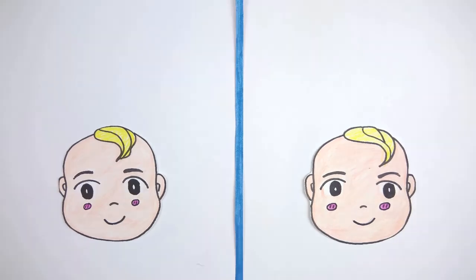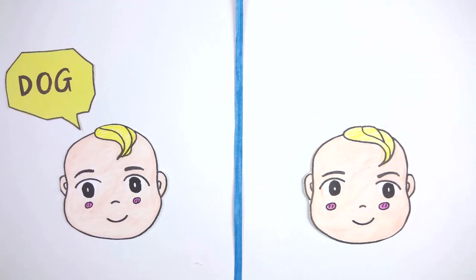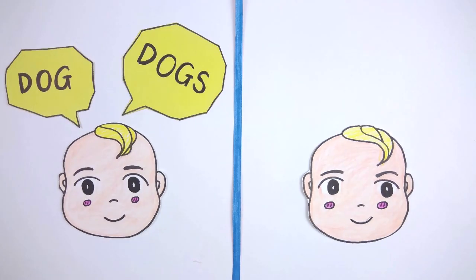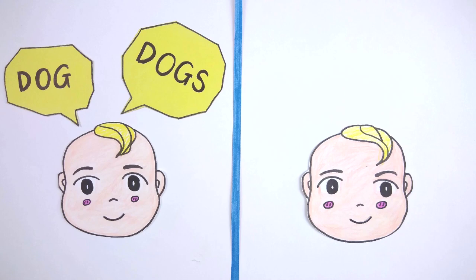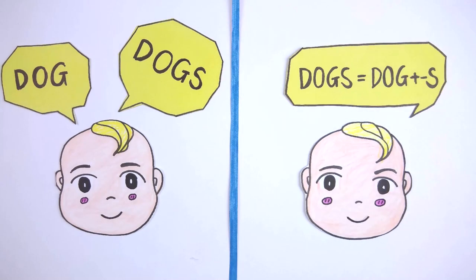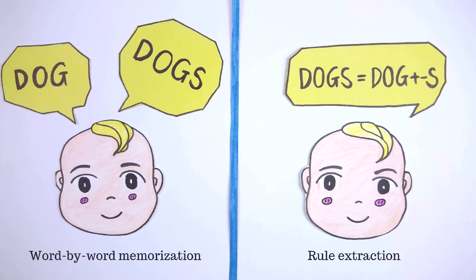The WUG test tried to find out whether children learn English morphemes by memorizing singular and plural forms, such as DOG and DOGS, independently, or whether they know the morphological rule, which claims that the noun DOG plus the plural morpheme S make the plural form DOGS.